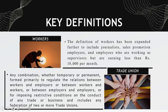When we look into the definition of 'worker' specifically, it has been expanded further to include journalists, sales promotion employees, and employees working as supervisors but earning less than rupees 18,000 per month. The definition of 'industry' has been amended from the 2019 bill to exclude organizations offering charity or philanthropic services, organizations under government control dealing with defense research, atomic energy, or space exploration, and organizations specifically excluded by the central government.